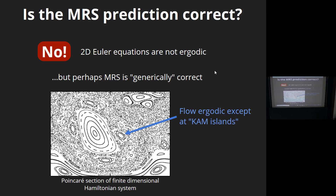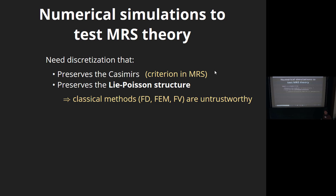How do we test this theory? People are doing numerical simulations - it's very hard to make progress theoretically. But once you start doing that, you realize the theory is based on conservation of Casimirs and conservation of the underlying symplectic structure, the Lie-Poisson structure. So in order to test this, it's essential that you preserve these structures, otherwise you cannot trust anything. This means classical methods like finite differences, finite elements, and finite volumes - you can just throw them out the window, because they don't preserve these quantities.